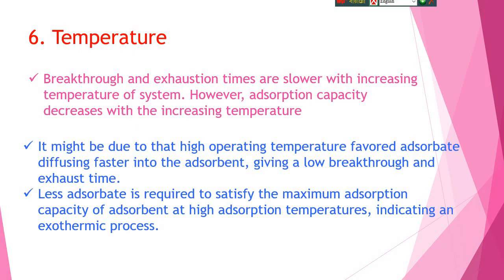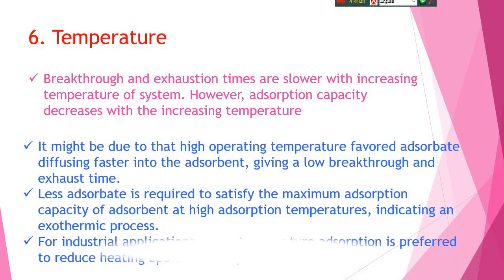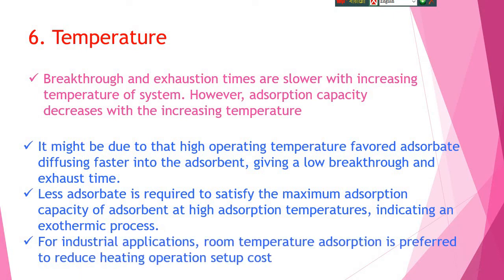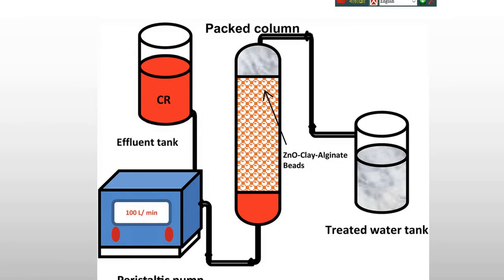Less adsorbate is required to satisfy the maximum adsorption capacity of the adsorbent, and high adsorption temperatures indicate an endothermic process. However, for industrial applications, room temperature adsorption is preferred to reduce heating operation and setup cost. Here is a typical setup for the column adsorption system: effluent tank, peristaltic pump, column, and treated water tank.